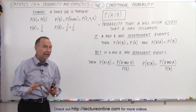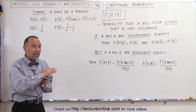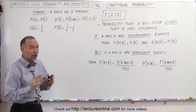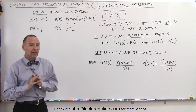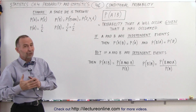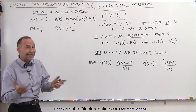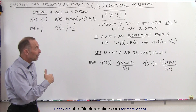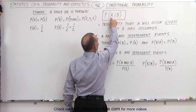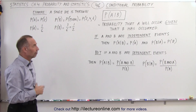If they are dependent events, then the probability of A will change once we know the outcome of B. If they are independent events, then B having occurred should have no effect on A. This concept typically deals with dependent events, such that once we know the outcome of B, we can recalculate the probability that A will occur.